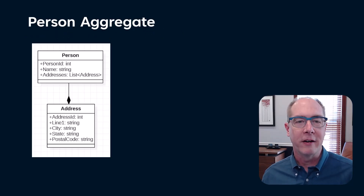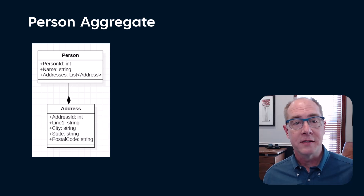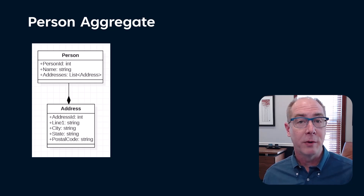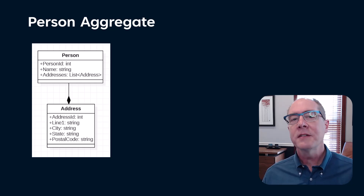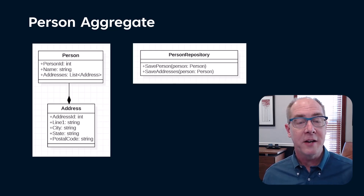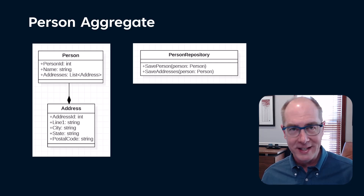Here's a simple aggregate — a class that represents a person with a collection of addresses. This aggregate started out with just person information, no addresses, so somebody wrote a repository with a save person function. Then someone else came along and decided to add an address collection, but instead of adding the persist logic to the existing save person function, a new function was added to the repository to save addresses. This is where the deadlock story begins.